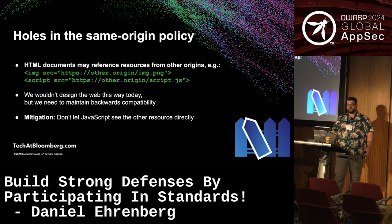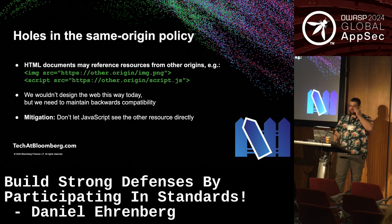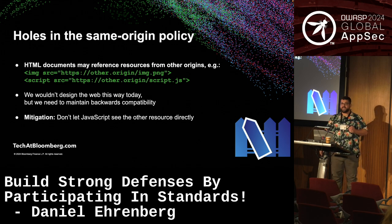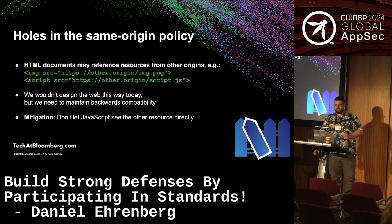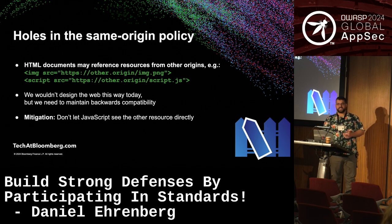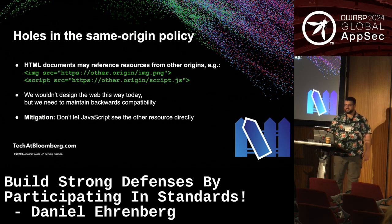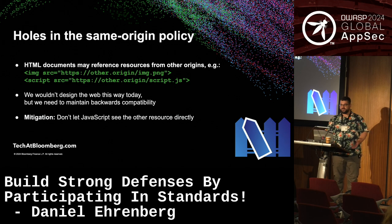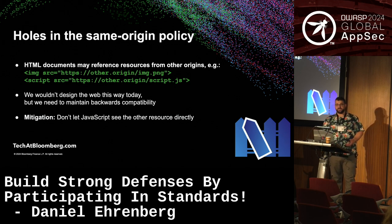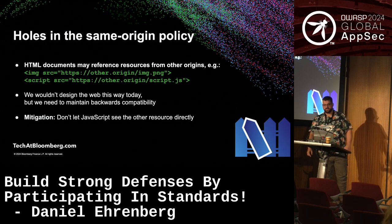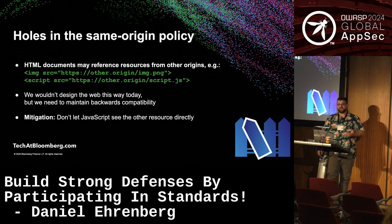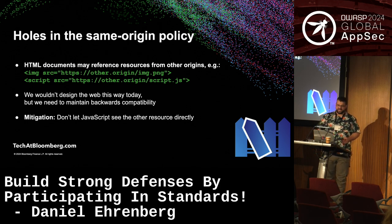There have been holes in the same-origin policy from the beginning of the web. You can have subresources like an image tag or script tag that point to whatever URL you want — this has been supported in HTML since forever. We wouldn't necessarily design HTML this way today. Fonts, for example, were added more recently and require CORS opt-in if you reference a font on another domain. But for image and script, because they're older, we have to allow them in.